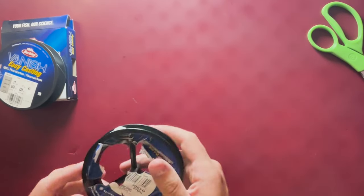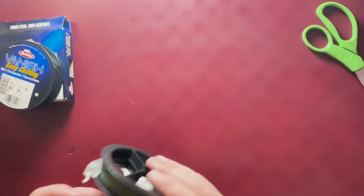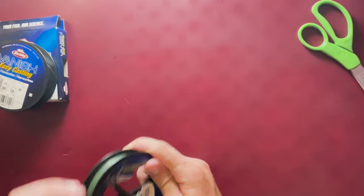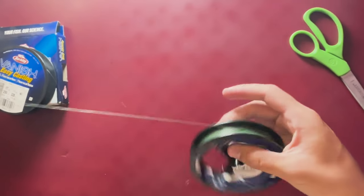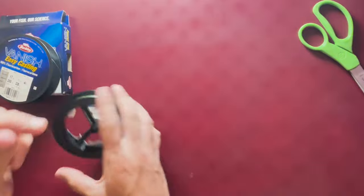The first step is to take your main line, which in many cases will be your braided line. I don't have an actual fishing rod with me, so I'll use this braid right here as an example.